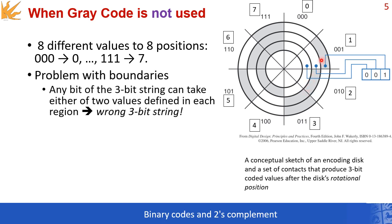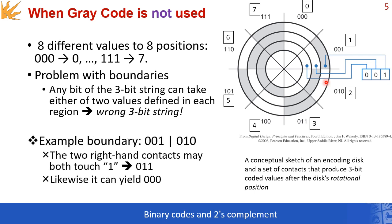However, note that there is a problem. Imagine that as this disk is rotating, there is a chance that those three contacts get trapped in the boundary between two different segments. Let's focus on the example between 001 and 010.